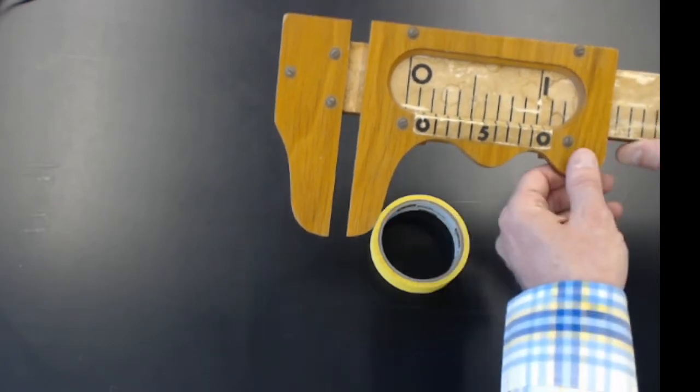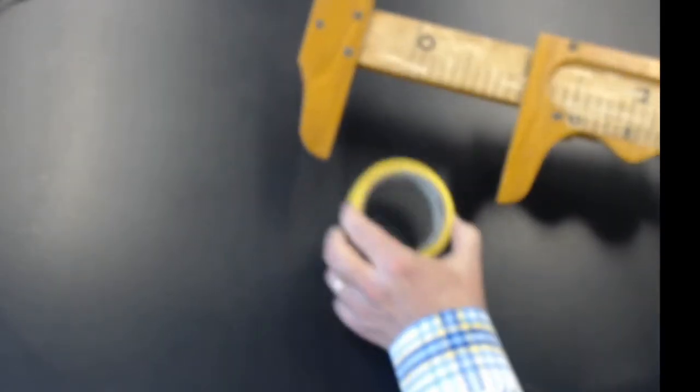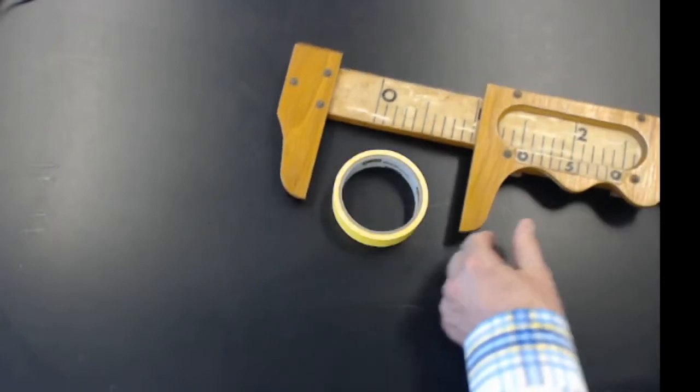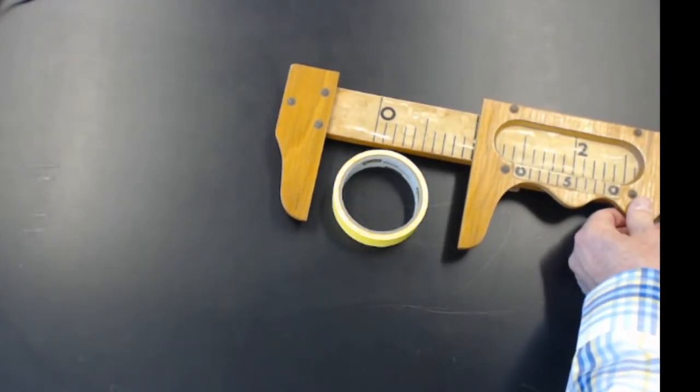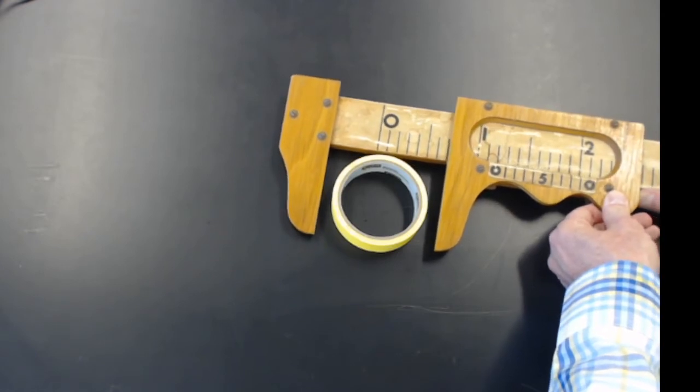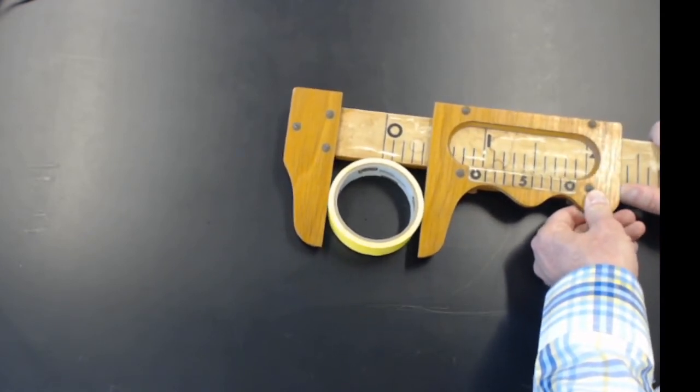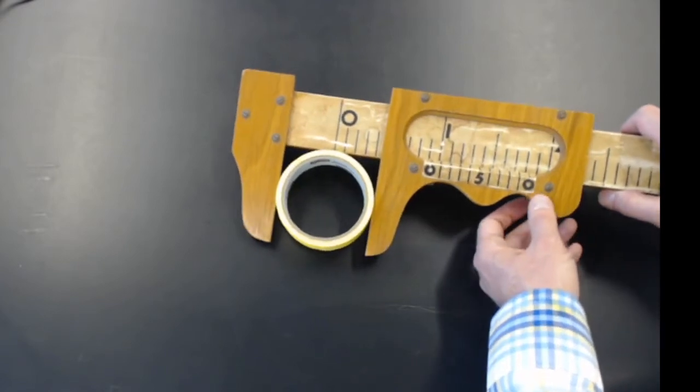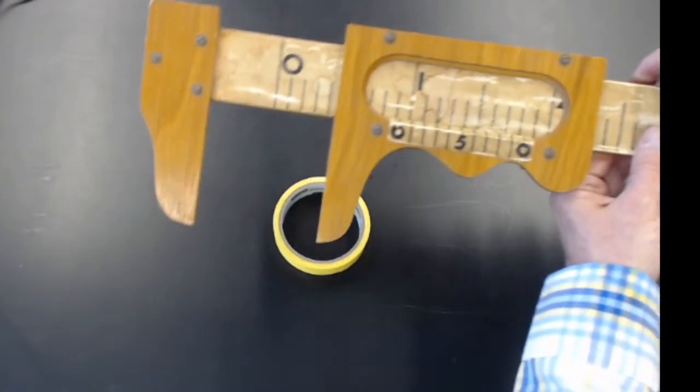If I want to get the diameter—remember, that's not the radius—I clamp this on. And then we can even take it out and look at how to read this.